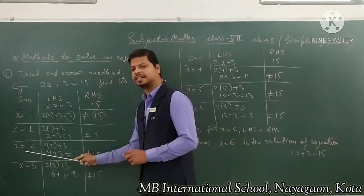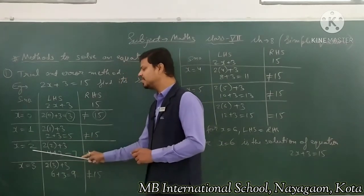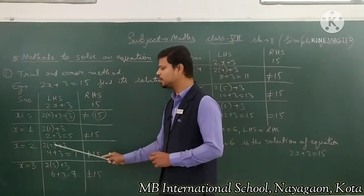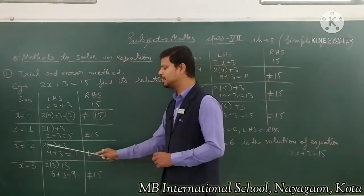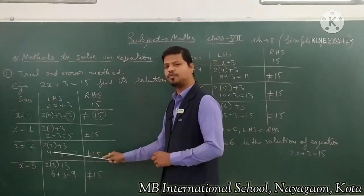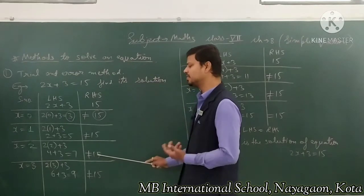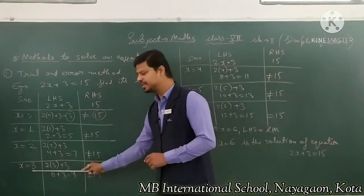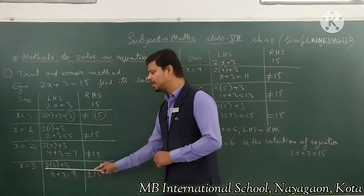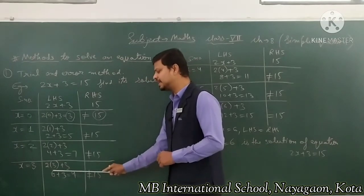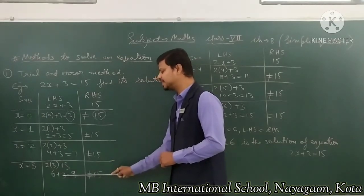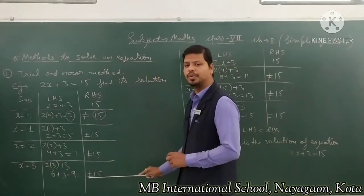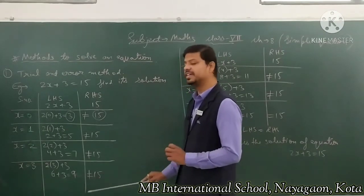Next, x = 2: 2 × 2 + 3 = 4 + 3 = 7. 7 is not equal to 15. After that, x = 3: 2 × 3 + 3 = 6 + 3 = 9. Is 9 equal to 15? No, 9 is not equal to 15.